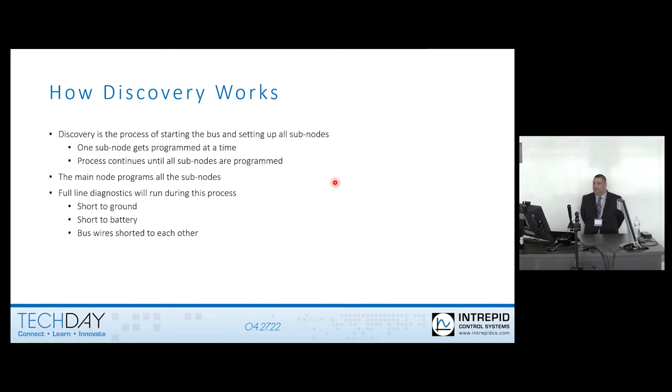The other part is discovery. What discovery is really the process of when the bus is going to initialize. So this is the bus initializing and then it's going to start programming all the nodes that are in the system. The way A2B works is it wakes up the bus, starts communicating to the first node, programs it, and then it finishes. And then the next sub node goes off, gets programmed, and it just keeps going down the daisy chain until the entire network is programmed. During this programming process, you do have full line diagnostics. So you can do detection like short to ground, short to battery, and if the wires are touching each other, for example.